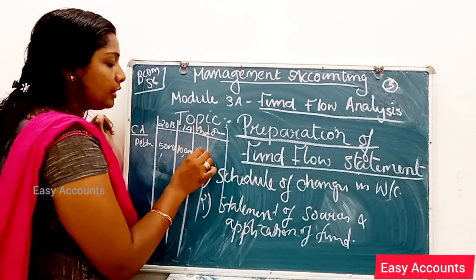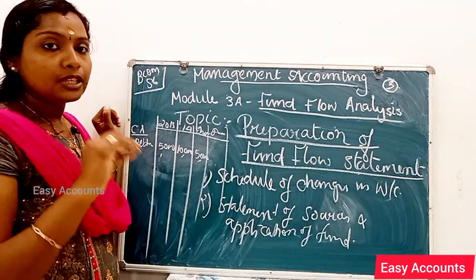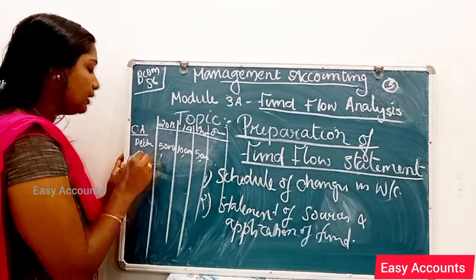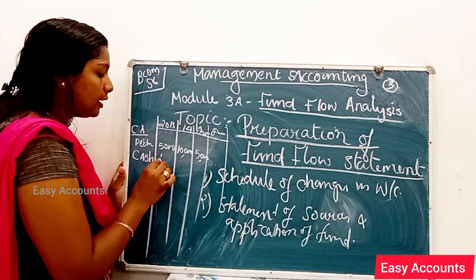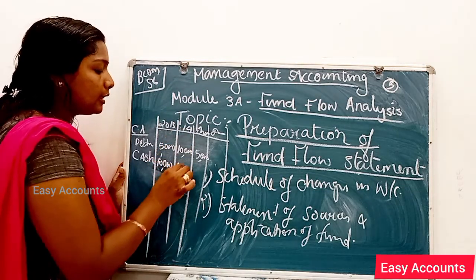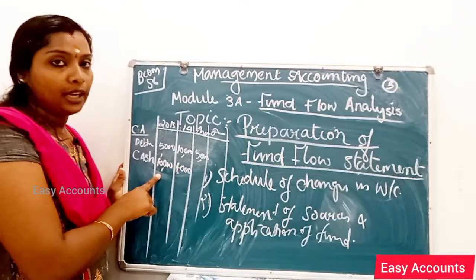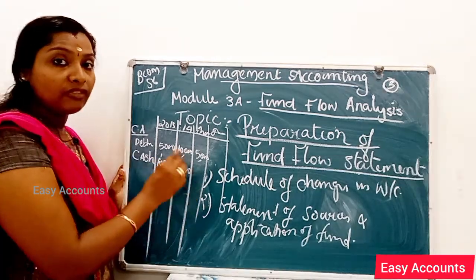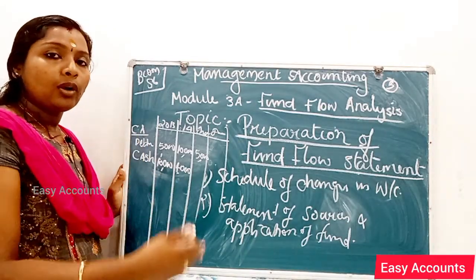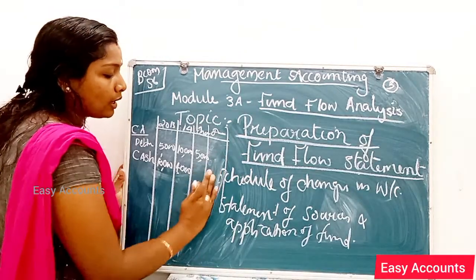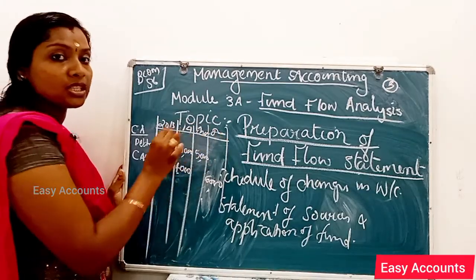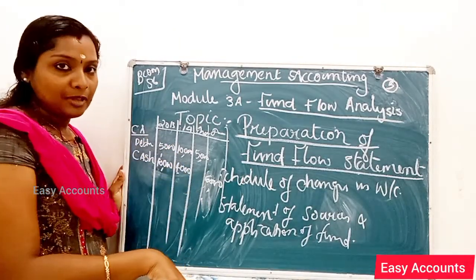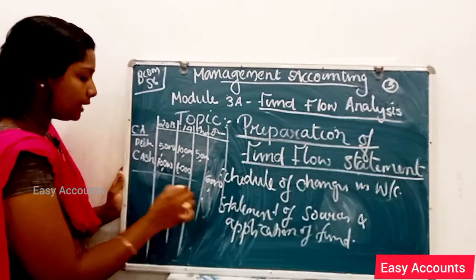An increase in current assets increases working capital; a decrease in current assets decreases working capital. For current liabilities, if a current liability such as creditors increases, it decreases working capital. If a current liability decreases, it increases working capital. Working capital is the excess of current assets over current liabilities, so these movements directly affect it.